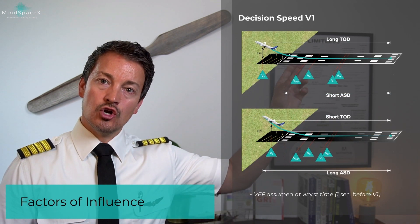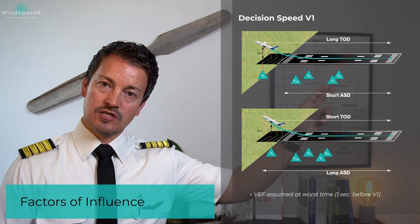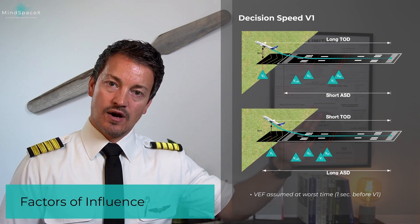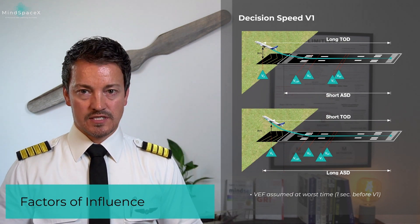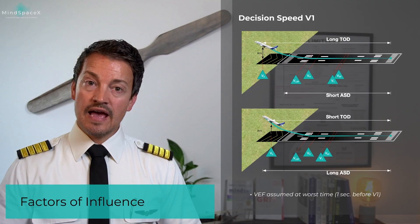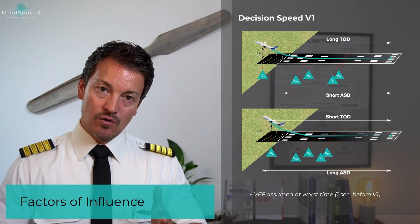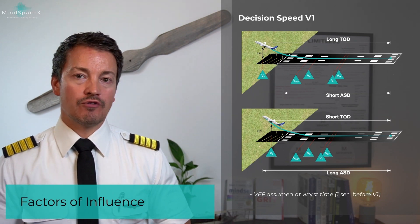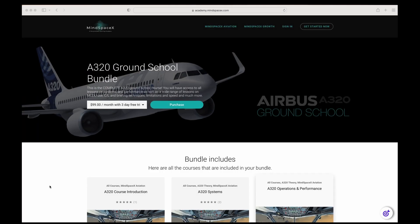So a low V1 means short accelerate-stop distance, long takeoff distance, and for a high V1, it is the opposite. VEF is always assumed to be at the worst case scenario, which is one second before V1.